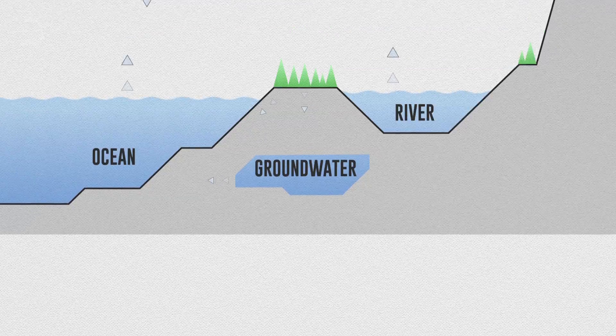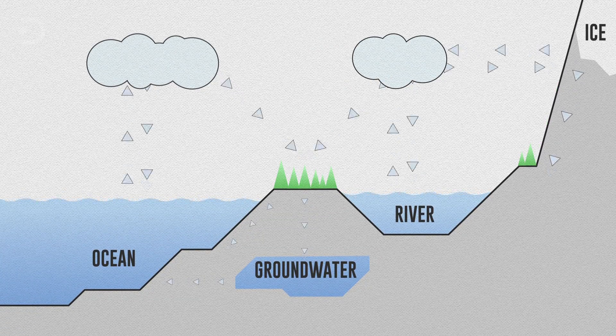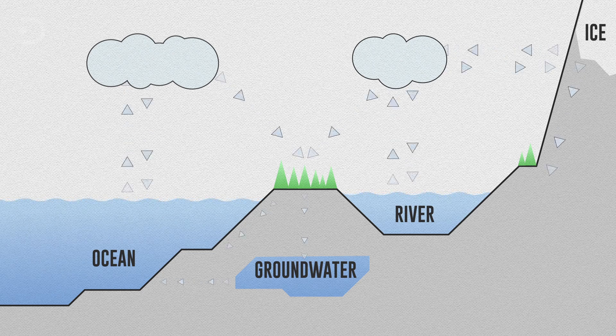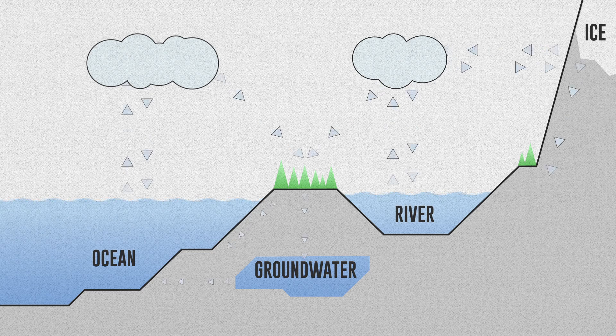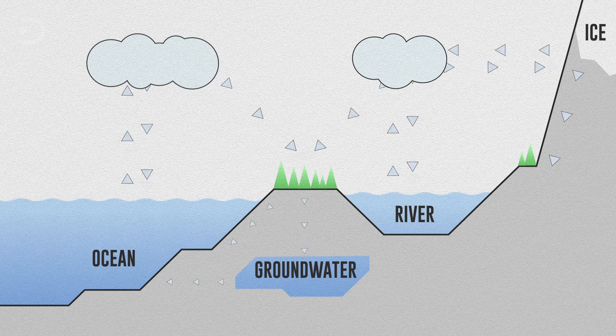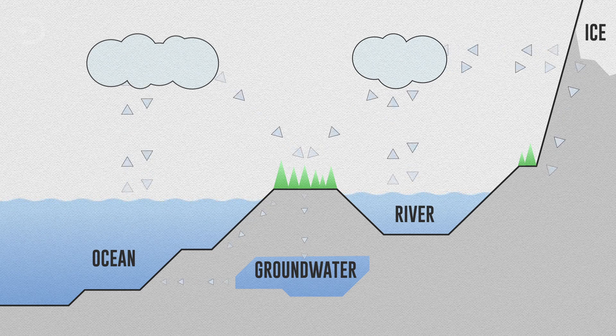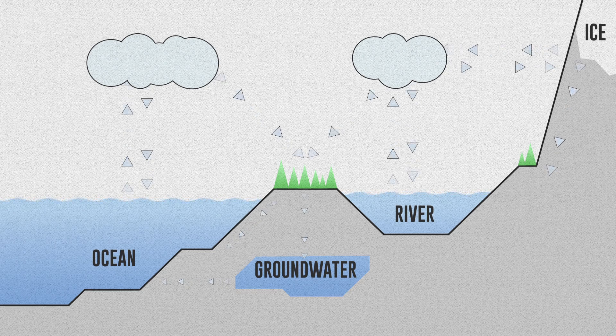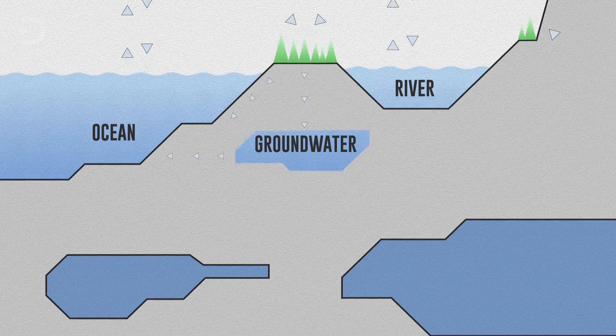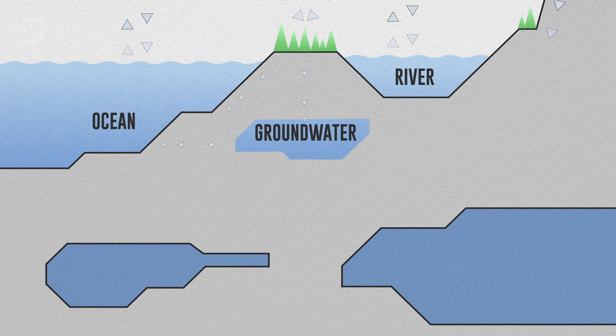It would seem that what goes inside the Earth must come back out somewhere. Sea levels have remained relatively stable over geological time. This means that all of the water going down into the Earth at subduction zones must be coming back up somehow and not continuously piling up inside the Earth. It could be possible that there might be vast underground oceans or lakes that we are unable to see.